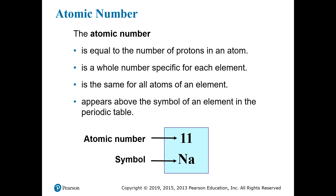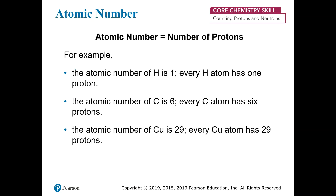On most periodic tables, the atomic number is written right above the symbol — either above or sometimes up and to the left — but usually it's the most prominent number in the box. So atomic number equals the number of protons. For hydrogen, it's one proton, so it's atomic number one. For carbon, it's six protons, so it's atomic number six. For copper, it's 29 protons, so it's atomic number 29.